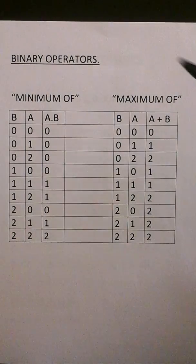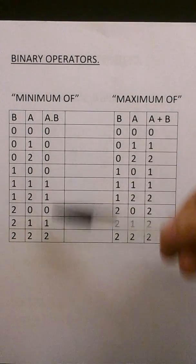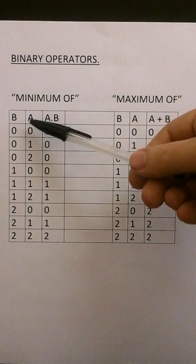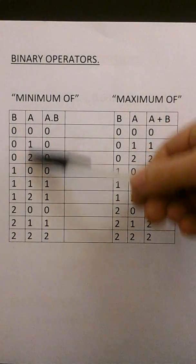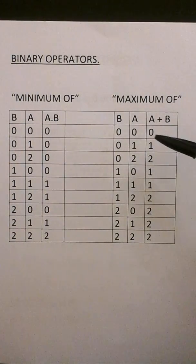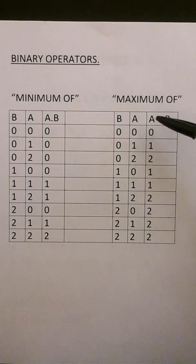Here we have the binary operators, binary meaning two inputs or more. Here we have the minimum function which takes the minimum value of whatsoever on its inputs A and B, and the maximum function which takes whatsoever on its inputs A and B and presents it to the output.